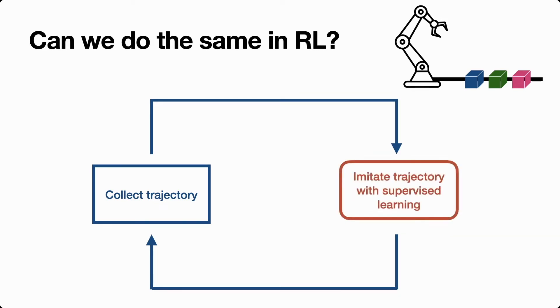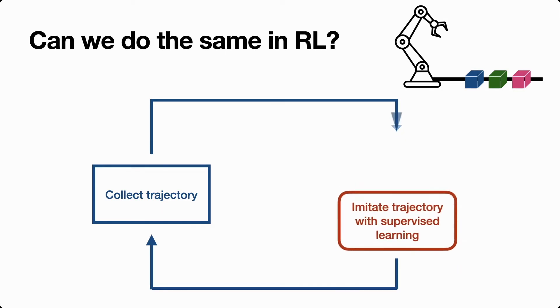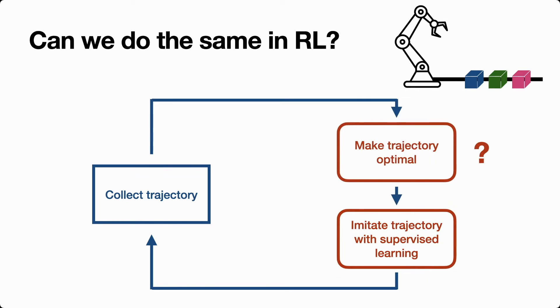One naive attempt might be to just change our policy update in the RL loop and have it imitate the trajectory we just collected. But this is clearly not going to work. In behavioral cloning the trajectory we were imitating was known to be optimal, but in RL this trajectory is being collected by our own suboptimal policy.